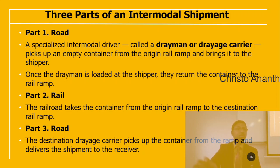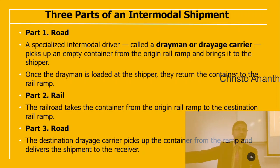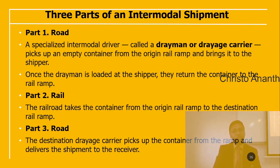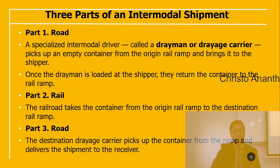The first part is road: an intermodal driver — the drayman or drayage carrier — picks up the empty container from the origin rail ramp and brings it to the shipper. Once loaded at the shipper, the drayman returns the container to the rail ramp. The second part is rail: the railroad takes the container from the origin rail ramp to the destination rail ramp. The third part is the destination dray: the destination drayage carrier picks up the container from the ramp and delivers the shipment to the receiver.